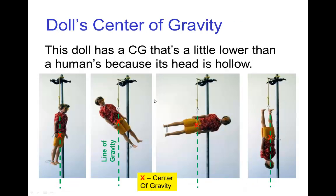Now here's an example, there's a doll, and this doll is hanging from different points on its body, and the center of gravity for this doll is located a little bit lower than a normal human center of gravity. The main reason is the doll has a hollow plastic head. Our heads are relatively heavy, which positions our center of gravity a little higher in the torso.